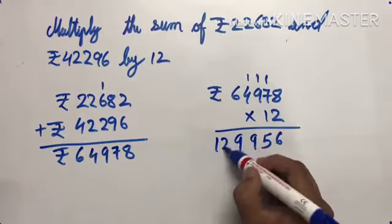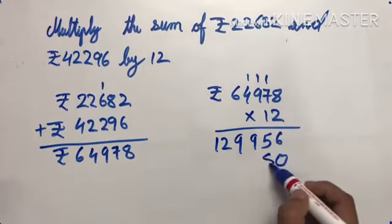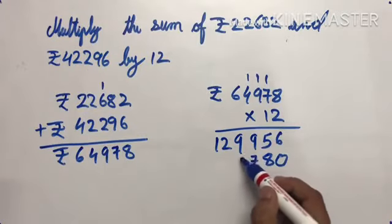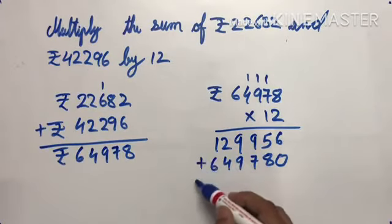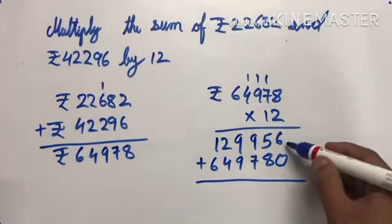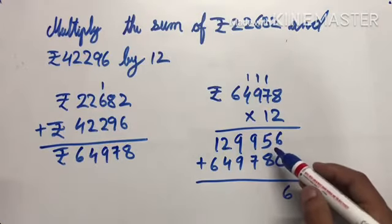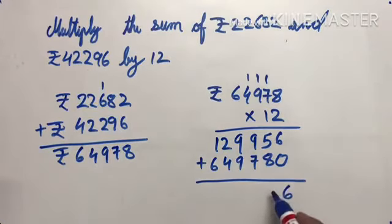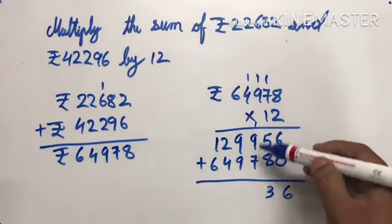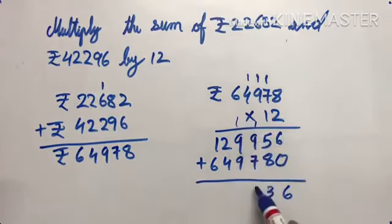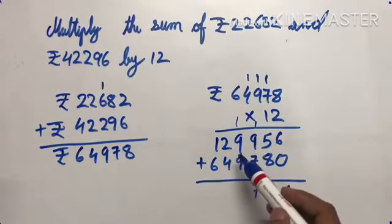Now multiply by 12. First by 2: 8 times 2 is 16, 7 times 2 is 14, 9 times 2 is 18, 4 times 2 is 8, 6 times 2 is 12. Then multiply by 1: 8, 7, 9, 4, 6. Now simply add: 6 plus 0 is 6, 8 plus 5 is 13, 9 plus 1 is 10, 10 plus 7 is 17, 9 plus 1 is 10, 10 plus 9 is 19.